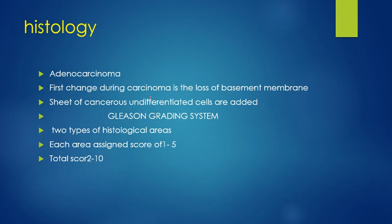As we know that the prostate is a gland, the tumor is an adenocarcinoma. The first pathological change that occurs in the tumor is the loss of the basement membrane, followed by the addition of undifferentiated cancerous cells.